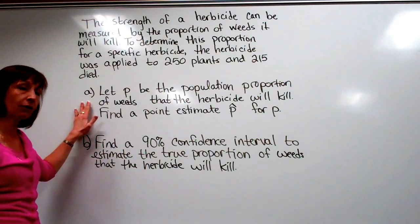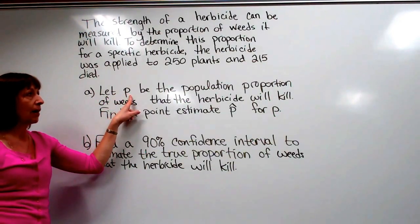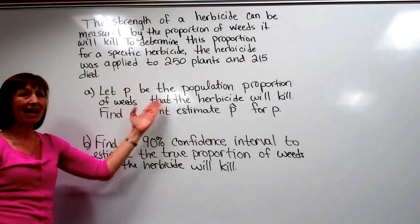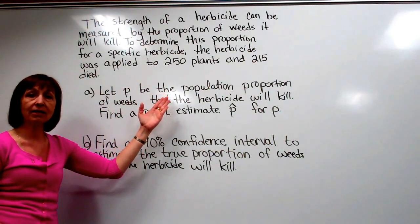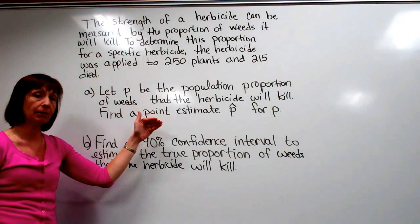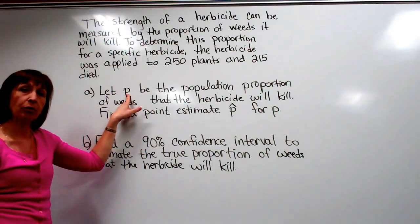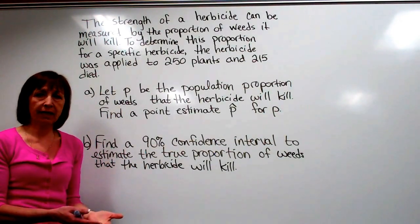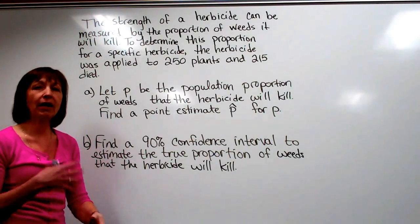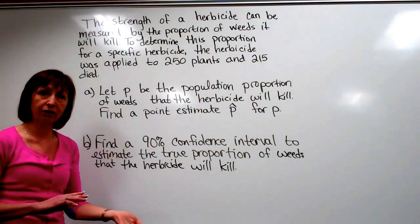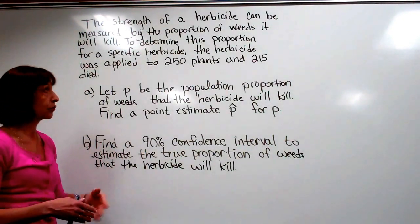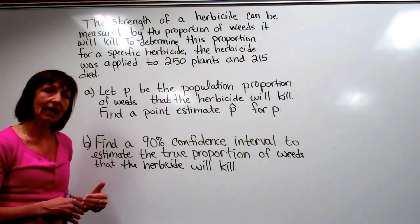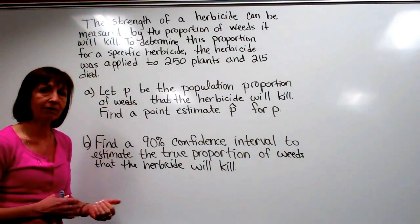Part A says: let P be the population proportion of weeds that the herbicide will kill. The wording tells us it's a population proportion problem. When applying the herbicide, the plant will either die or it won't — success versus failure — with 250 repeated trials, counting successes out of trials.